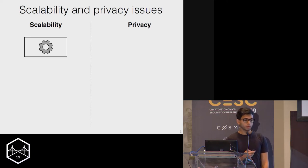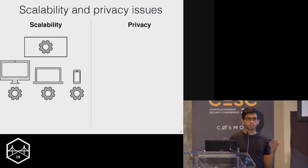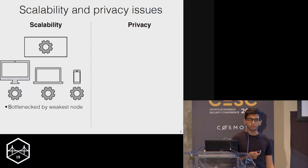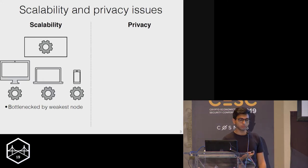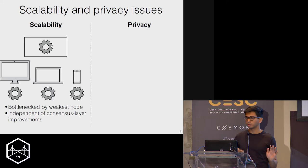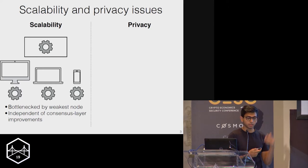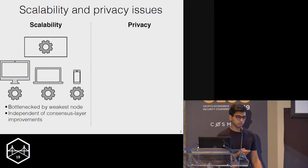From a scalability point of view, the problem is that since your network consists of heterogeneous devices with different computing power, you're bottlenecked by the weakest node — every node has to re-execute the computation. So if you have a very slow node in the network, you have to wait for that node to confirm correctness before you can proceed. This is independent of any consensus layer improvements, because even with the best ledger, you still need to check that a proposed transaction is actually correct.